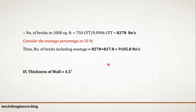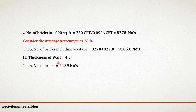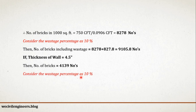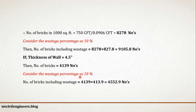Let's see how many bricks we need for a 4.5 inch thick wall. If the thickness of wall is 4.5 inch, then number of bricks equals 4139. It's simple — if you divide 8278 by 2, then you will get 4139 numbers. Here also, I am considering wastage percentage as 10%. So, number of bricks including wastage equals 4552.9.